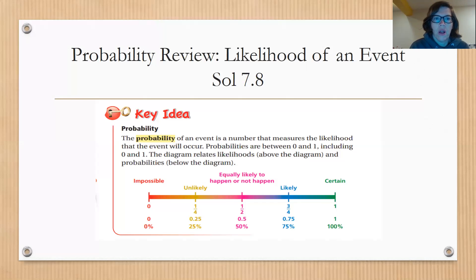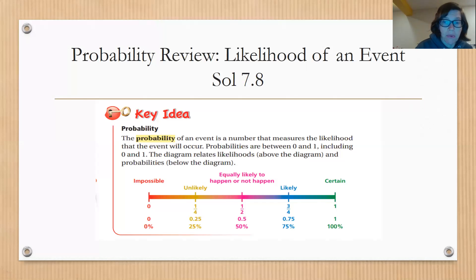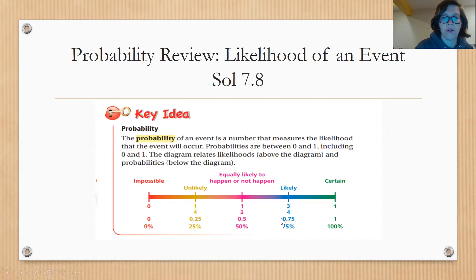First we're going to review what we talked about last time. We talked about finding the likelihood of an event and how the probability of an event is the number that measures the likelihood that the event will occur, and that probabilities are between zero and one. This diagram shows how likelihood relates to probability: zero is impossible, one-fourth or 25% is unlikely, one-half or 50% is equally likely to happen or not happen, three-fourths or 75% is likely, and one or 100% is certain.